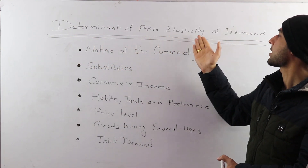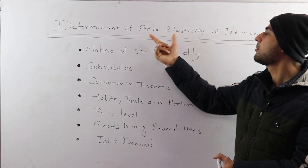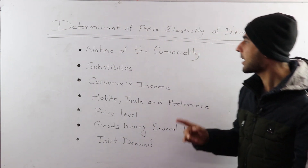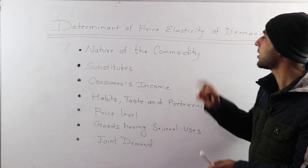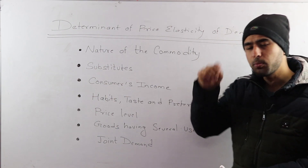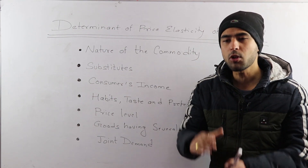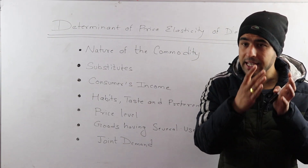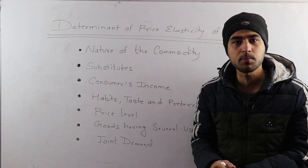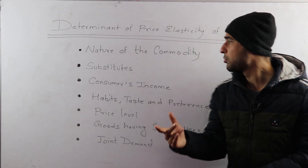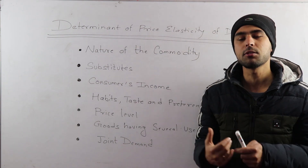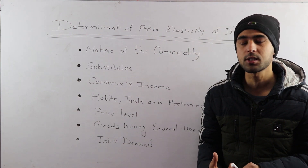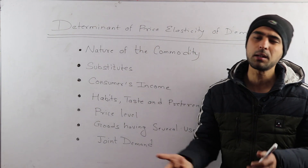This is the first determinant of price elasticity of demand: the nature of the commodity. The nature of the commodity means that the price affects demand differently depending on whether the good is a necessity or a luxury.